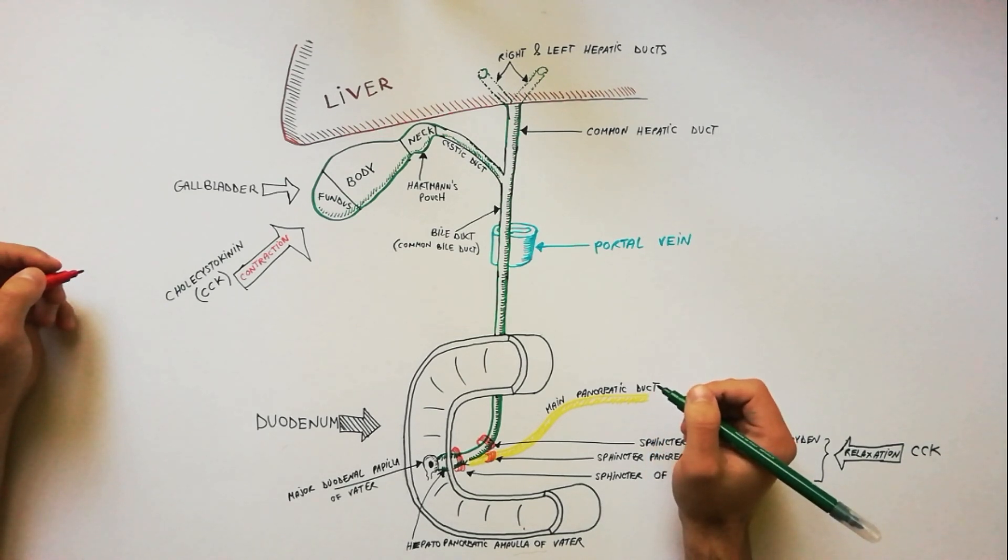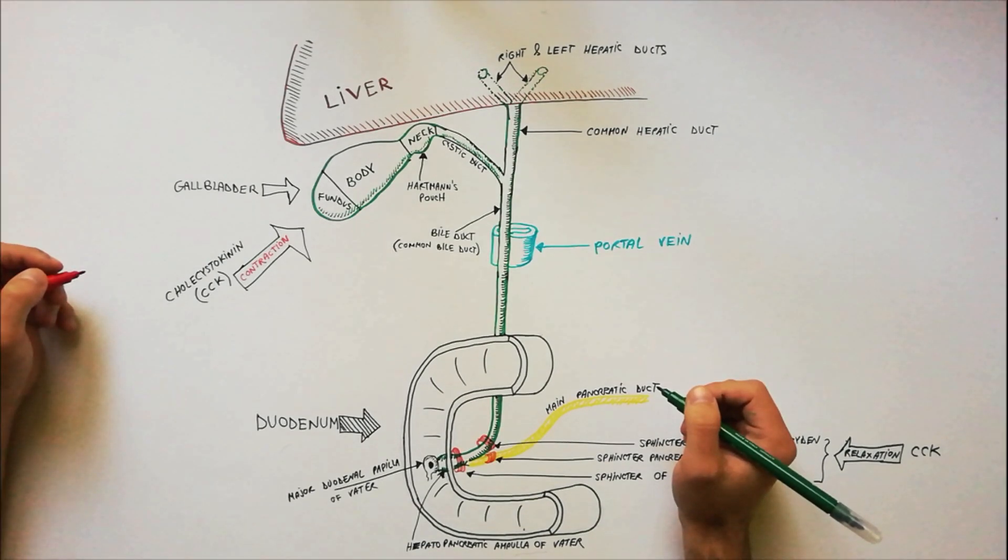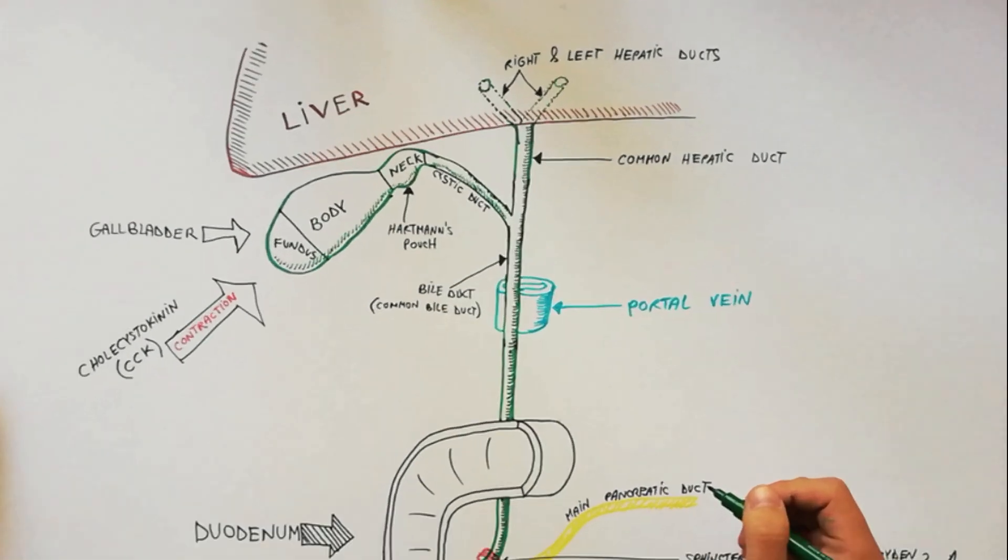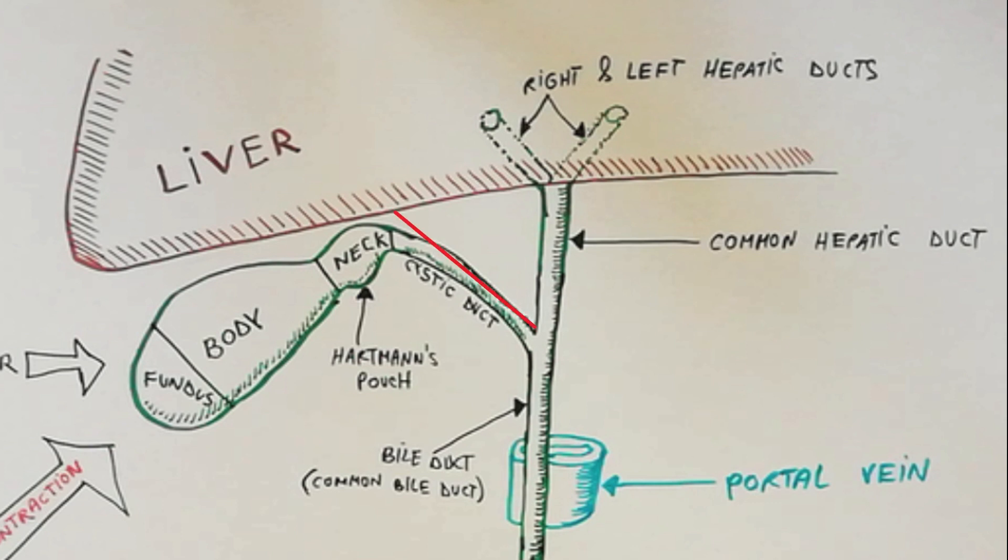Now let's discuss about a very important region called Cystohepatic Triangle of Calot. The Cystohepatic Triangle is bounded on the right side by the cystic duct, on the left side by common hepatic duct, and above by inferior surface of the liver.